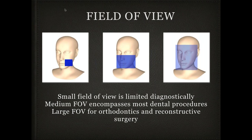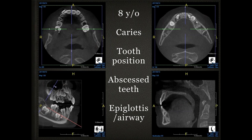The next thing to understand is field of view. A small field of view, pictured on the left, is limited diagnostically but has lower radiation and is more detailed in its image — ideal for an endodontist working one tooth at a time. A medium field of view encompasses most dental procedures and works for most general dentists. A large field of view, on the right, is for orthodontics and reconstructive surgery. A large field of view drives up machine cost, increases radiation, and isn't quite as detailed, so a medium field of view satisfies most of my needs.